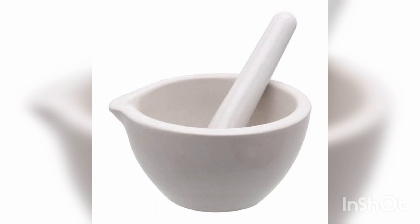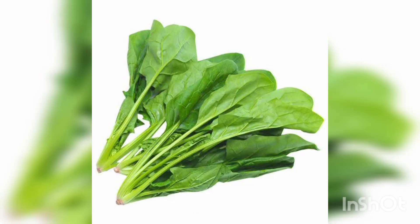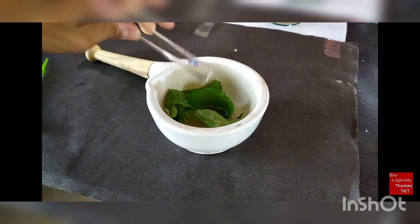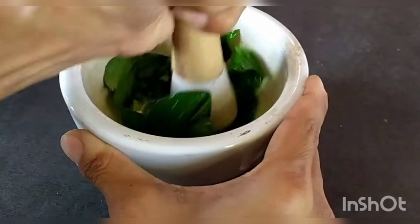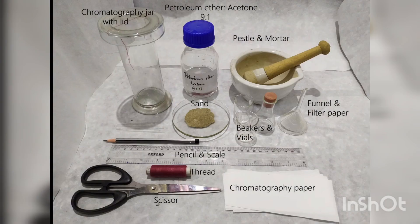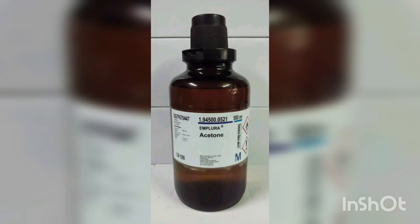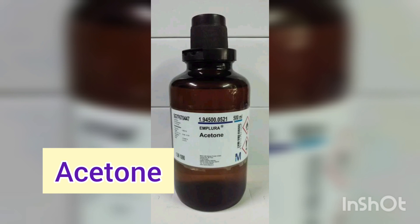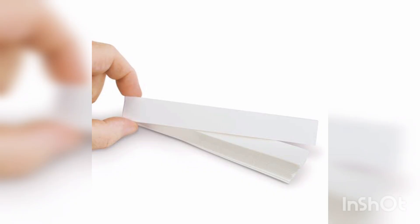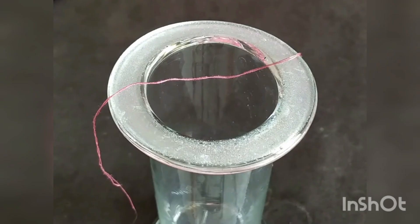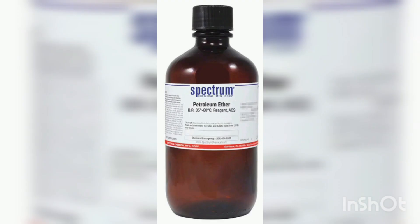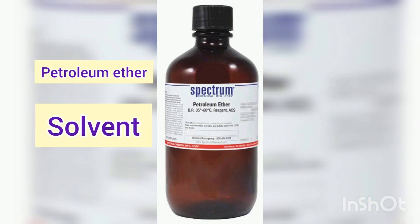We will use spinach leaves. You have to grind these spinach leaves by adding acetone, after which you will have a paste-like extract. This extract is used for identification of different pigments. Here are the requirements: acetone, paper strips or chromatography strips, a jar used to hang the strip, and petroleum ether which goes into the jar.